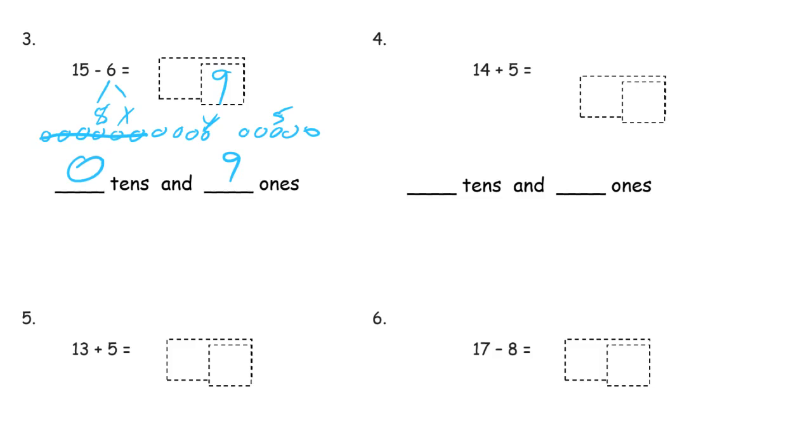And now there's 14 plus 5. You've got 5 more. So 14, 15, 16, 17, 18, 19, that's 19. That's 1 ten and 9 ones. But it's 1 ten, not 1 tens. So we've got to cross out the S.